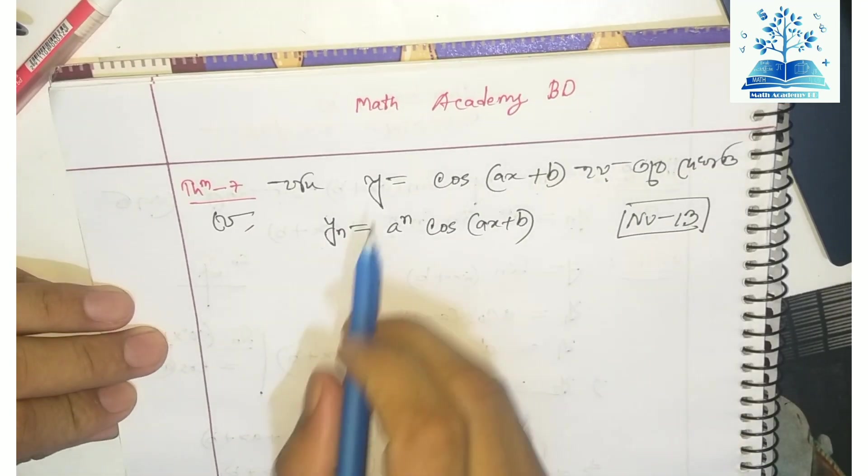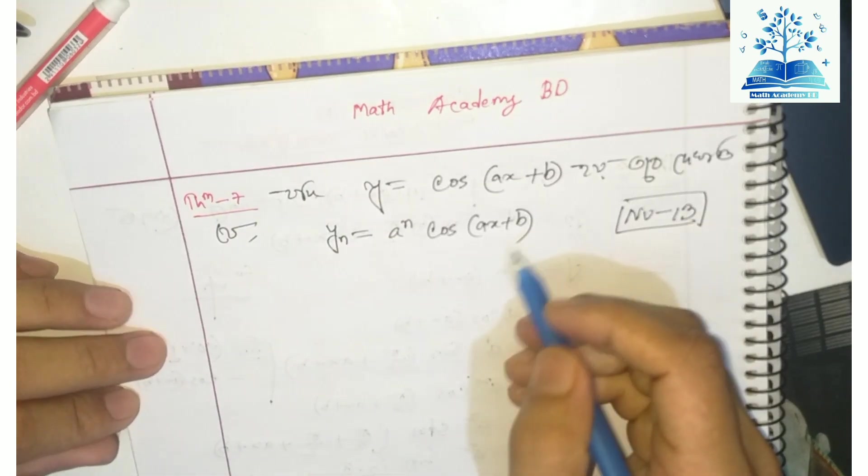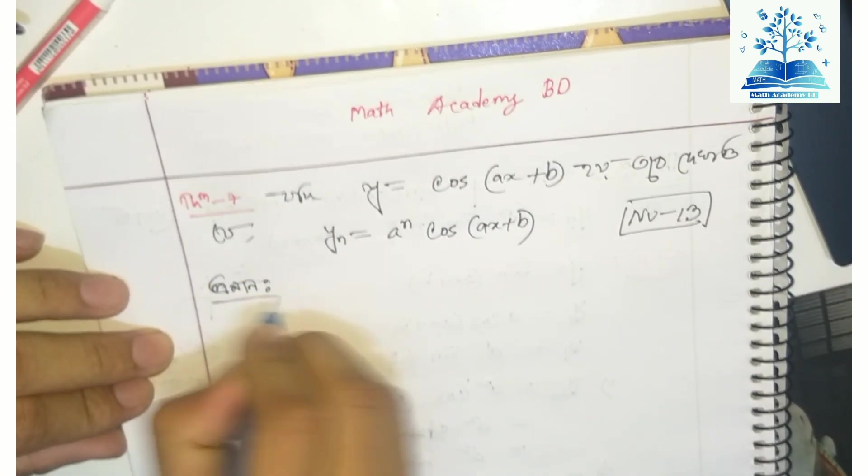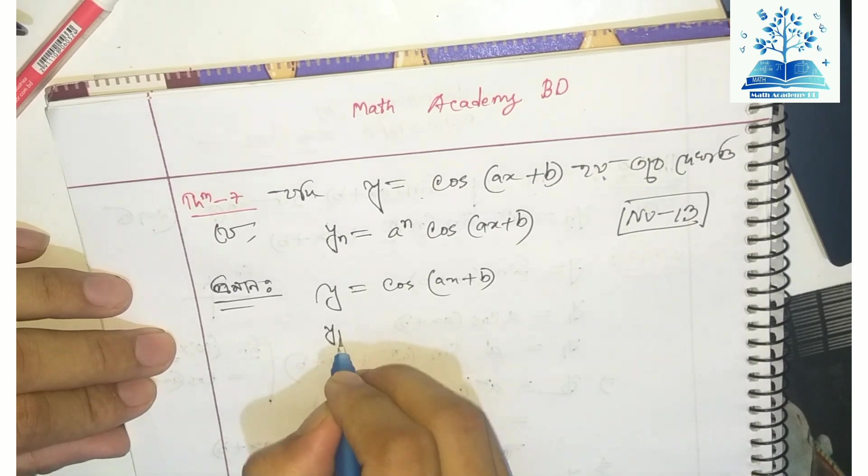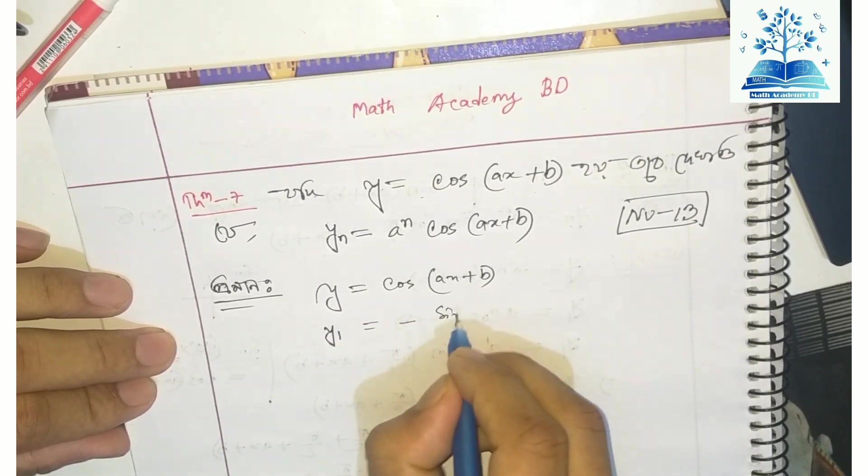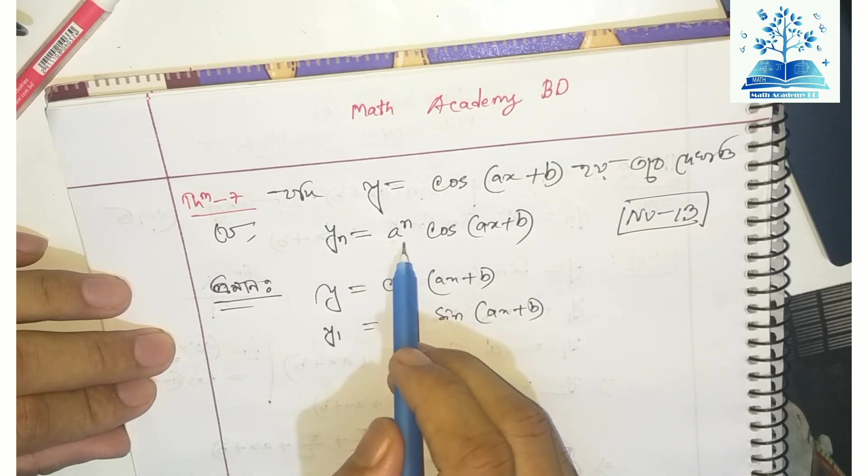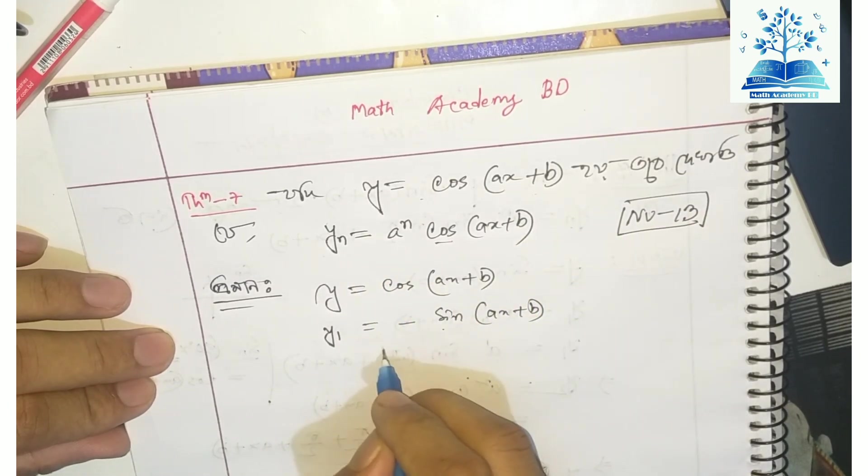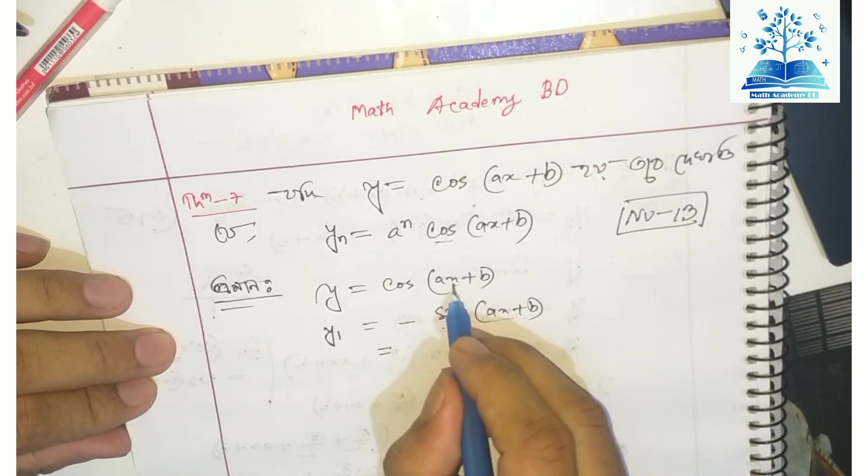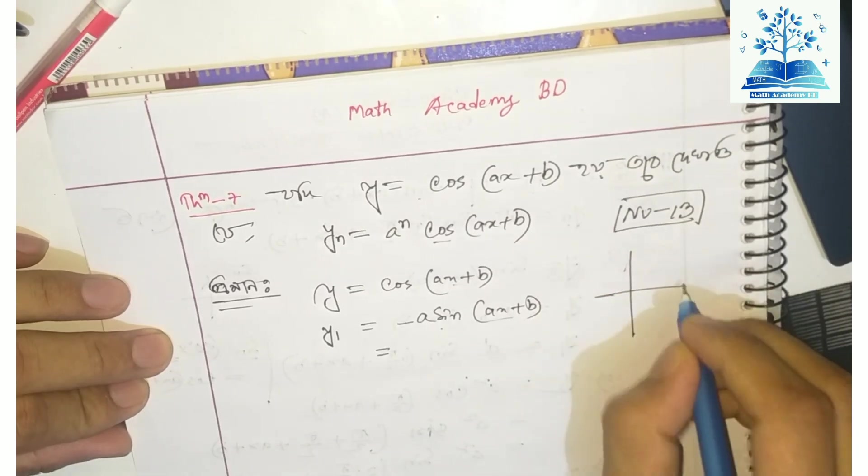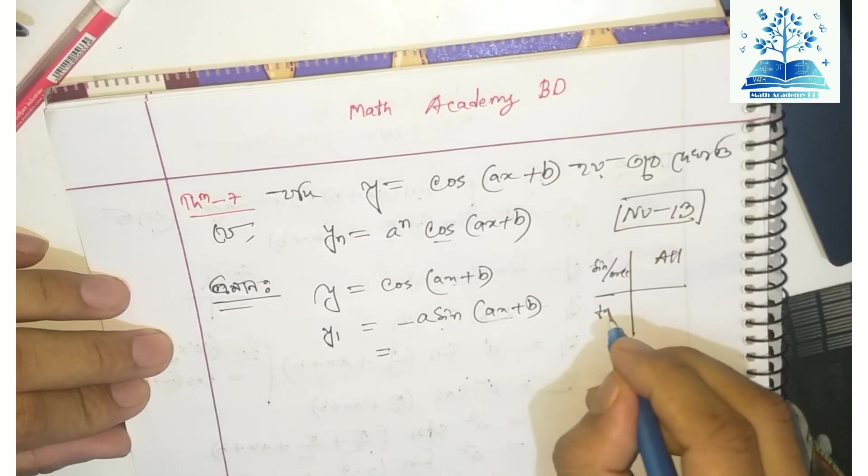Now, if y equals cos(x + b), show that yₙ equals aⁿ cos(n·π/2 + x + b). For y = cos(x + b), when we differentiate y₁, we get -sin(x + b).